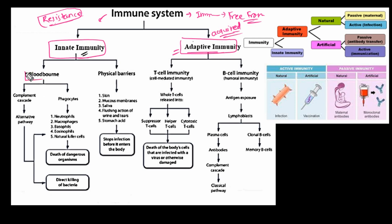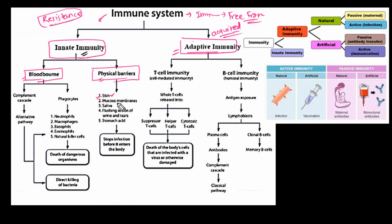Innate immunity is activated naturally in our body system before or after birth. It relies on physical barriers. The physical barriers defend our body against any kind of foreign object or microorganism. We have our skin, which acts as a very strong defensive layer protecting us from several microorganisms that cannot enter through it. This is actually the first layer of the barrier system. Similarly, we have mucous membranes as another barrier.